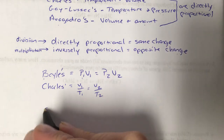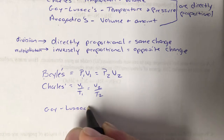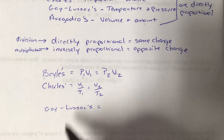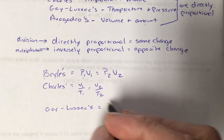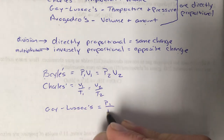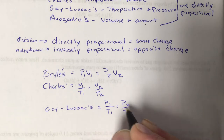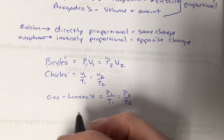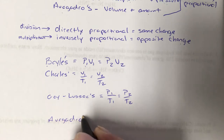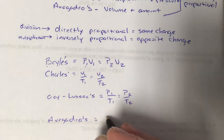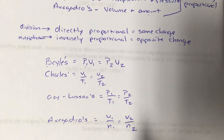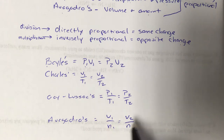Gay-Lussac's law is about temperature and pressure. It's directly proportional, so it's division. We set it up similarly to Charles' law, but with P's on top instead of V's: P1 over T1 equals P2 over T2. Finally, Avogadro's law covers volume and amount — amount is represented by N, the number of moles. We have a V and an N on each side: V1 over N1 equals V2 over N2, starting values on one side, ending on the other.